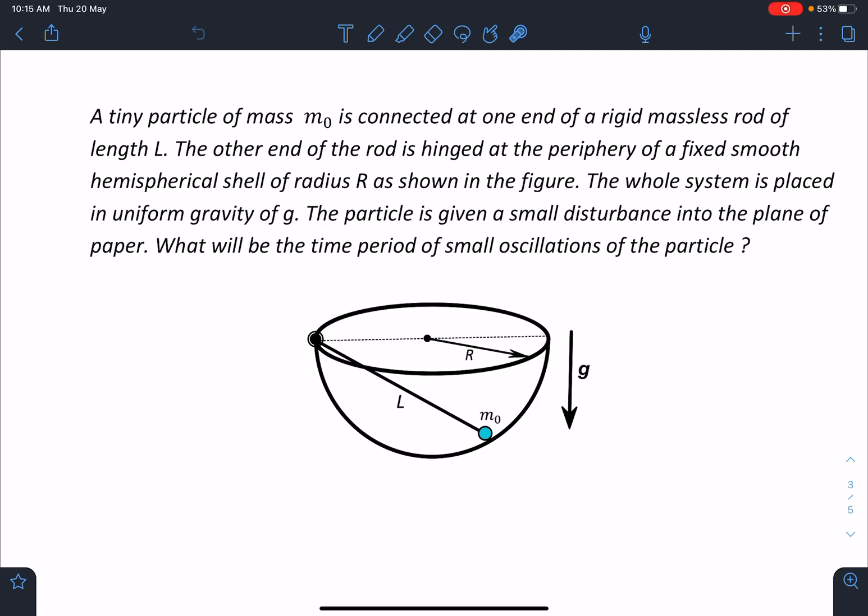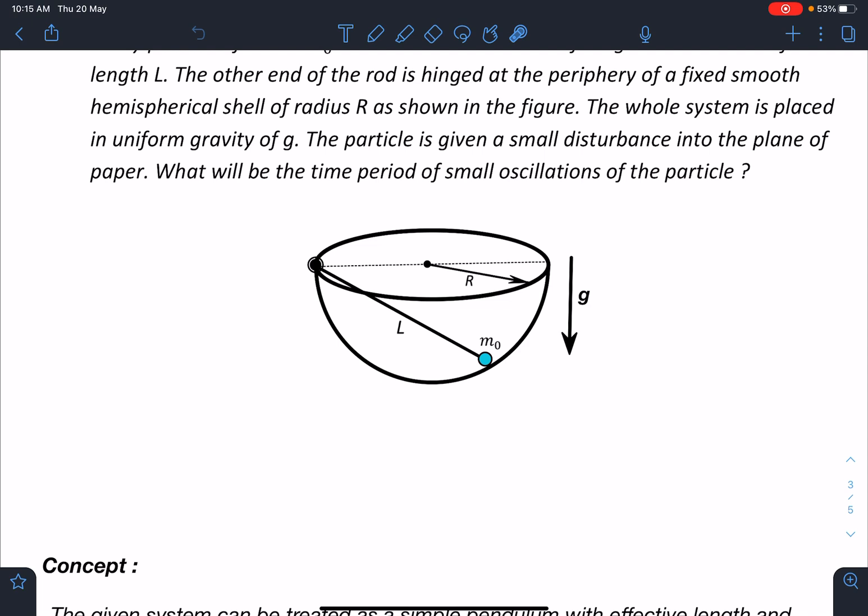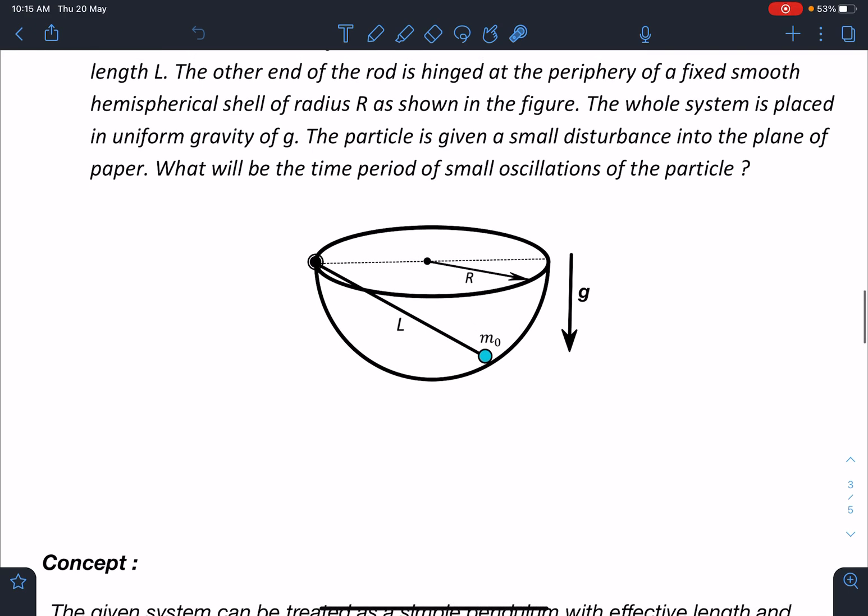The rod is given as massless. Concept-wise, we can reduce this problem into an effective pendulum problem. For that, we need to find out the axis of rotation. If we can locate it, we will drop a perpendicular from the particle on the axis of rotation. That is going to give us L effective, and the component of g along this length will be g effective. This is the concept we have been developing through previous problems.